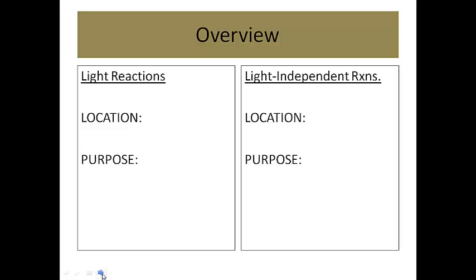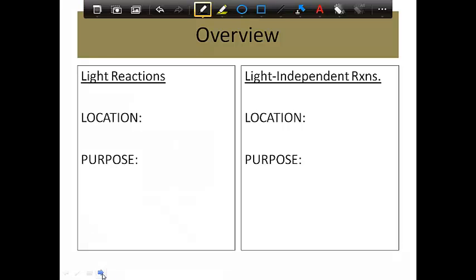In this one, we're going to talk about two steps. We call them the light reactions and then the light-independent reactions, which is also called the Calvin cycle. So it has two names. The light-independent versus light reactions give you a clue as to what's going on with those reactions, so I like to use those names as well.